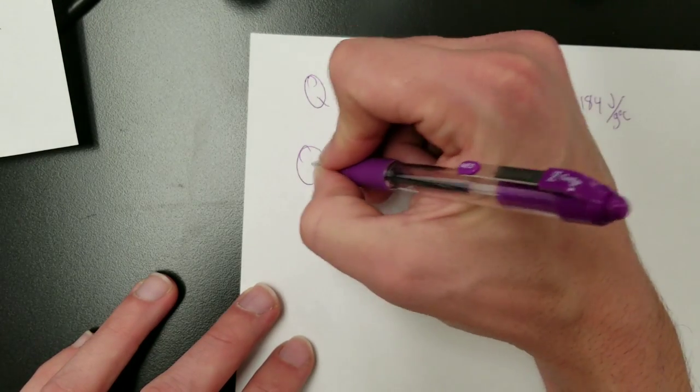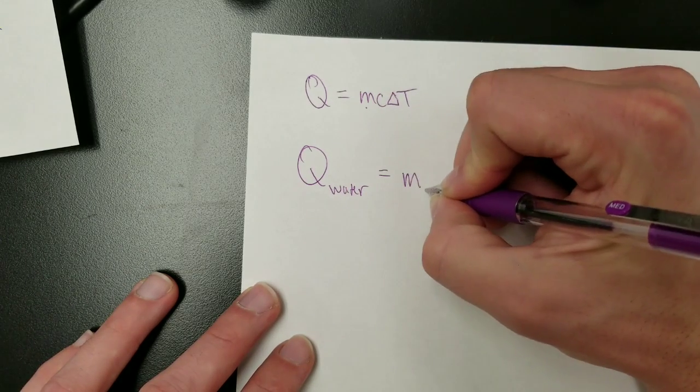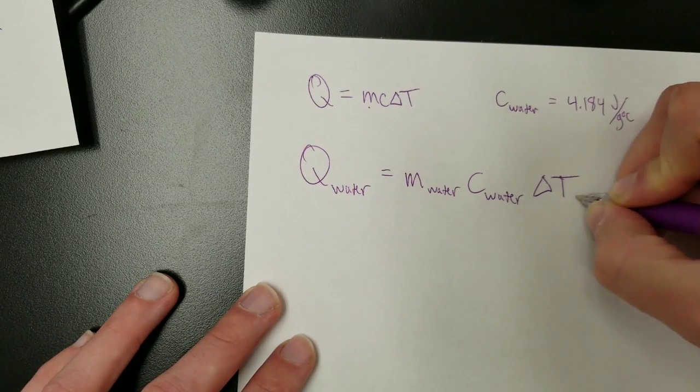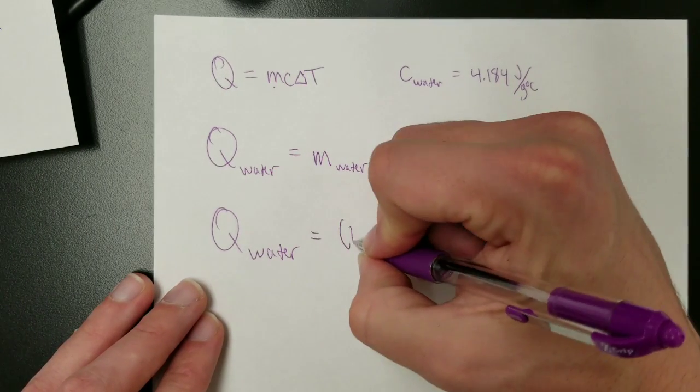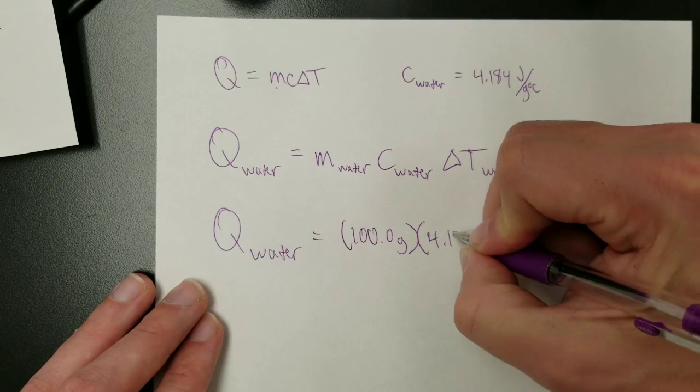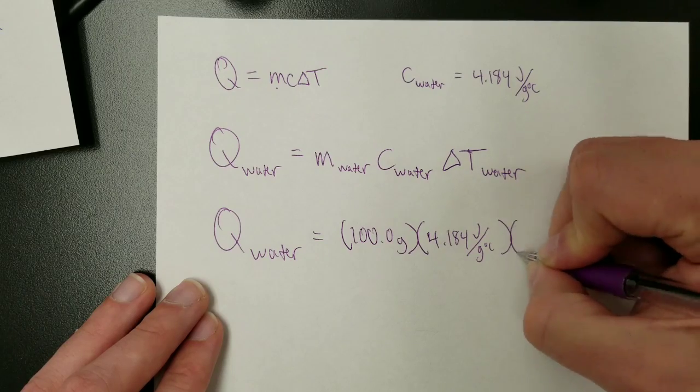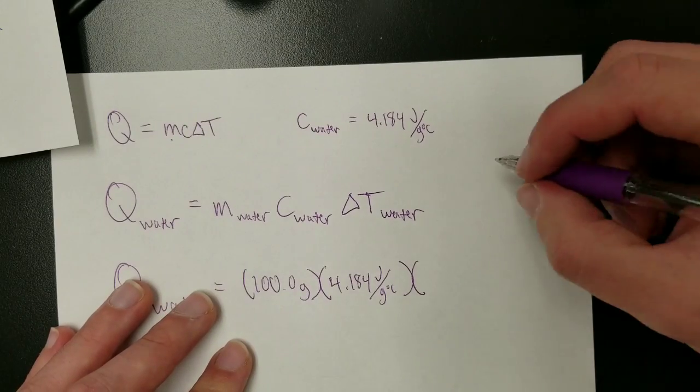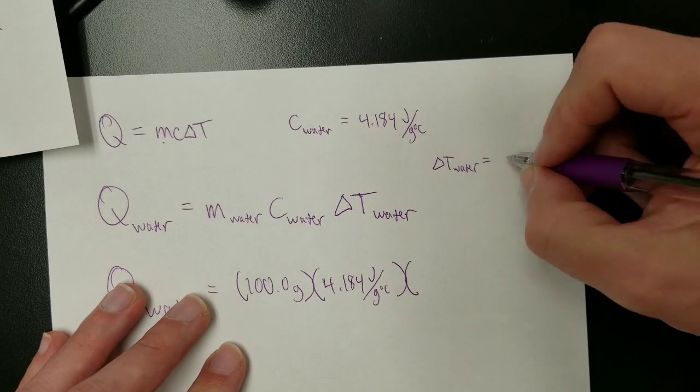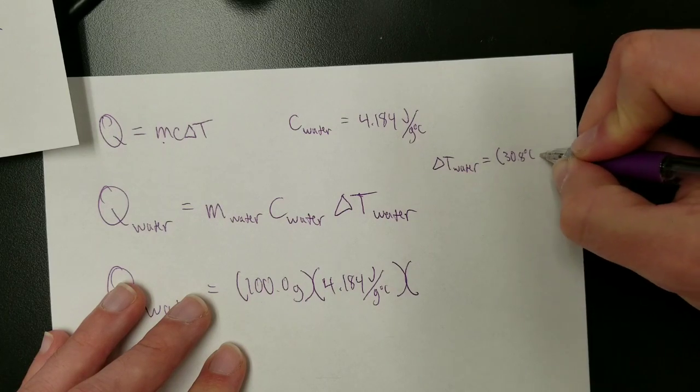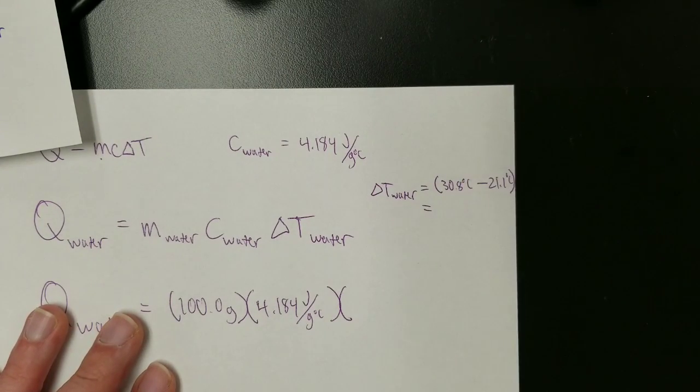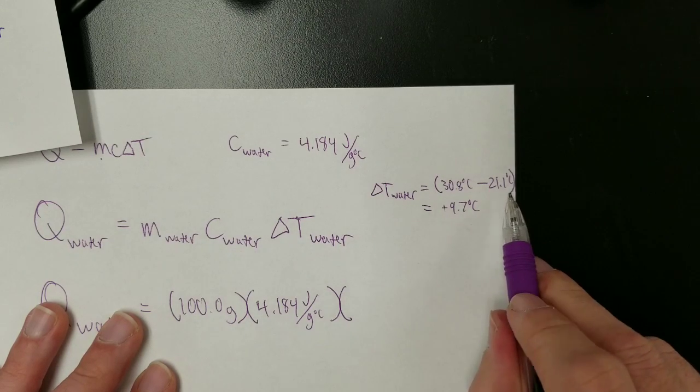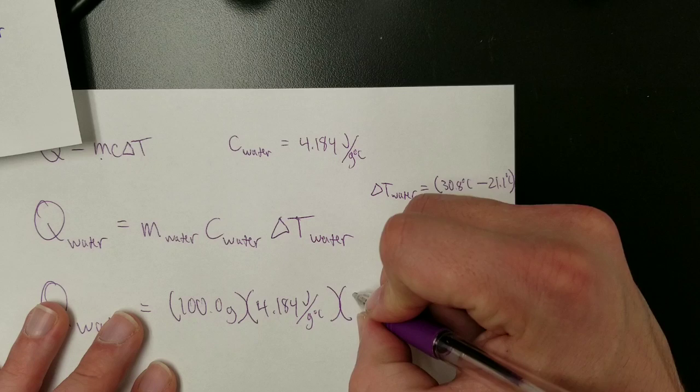So Q equals MC delta T. Q of water equals mass of water, specific heat of water, delta T of water. Q of water equals 100.0 grams times 4.184 joules per gram degree Celsius. And then delta T of water. It ended at 30.8 degrees Celsius and it started at 21.1 degrees Celsius. Which means the temperature change of the water was plus 9.7 degrees Celsius. It got 9.7 degrees warmer.